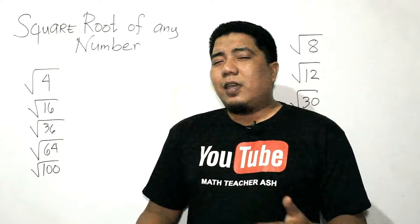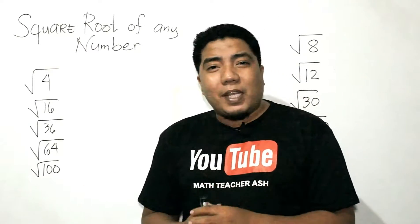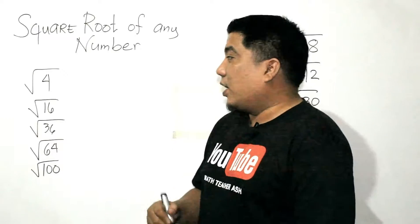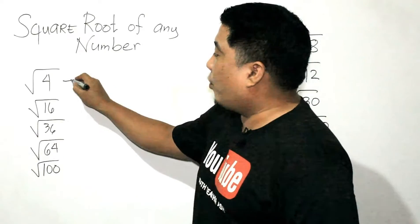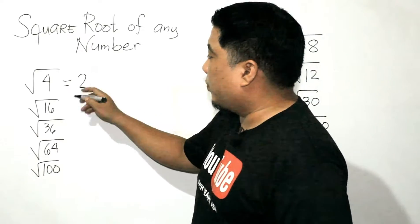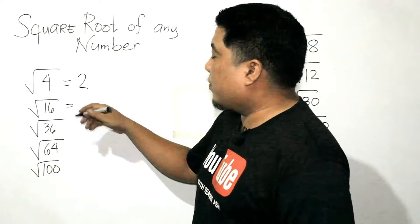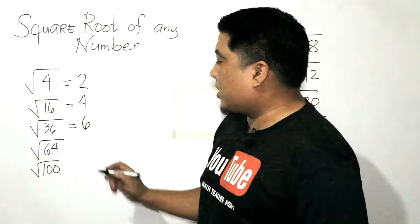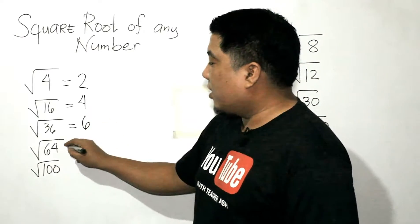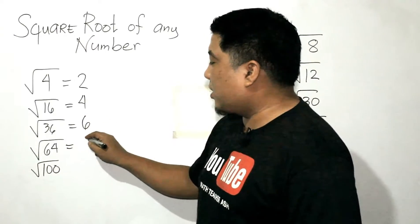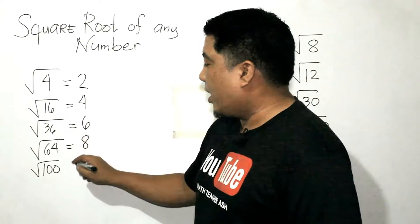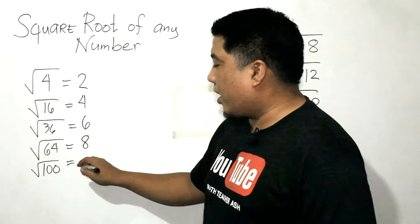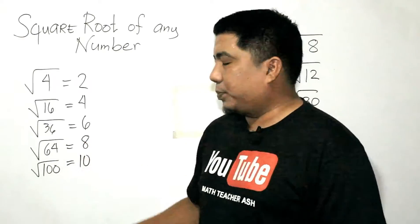Basically, if we get the principal root of these numbers: the square root of 4 is 2, the square root of 16 is 4, the square root of 36 is 6, the square root of 64 is 8, and the square root of 100 is 10.